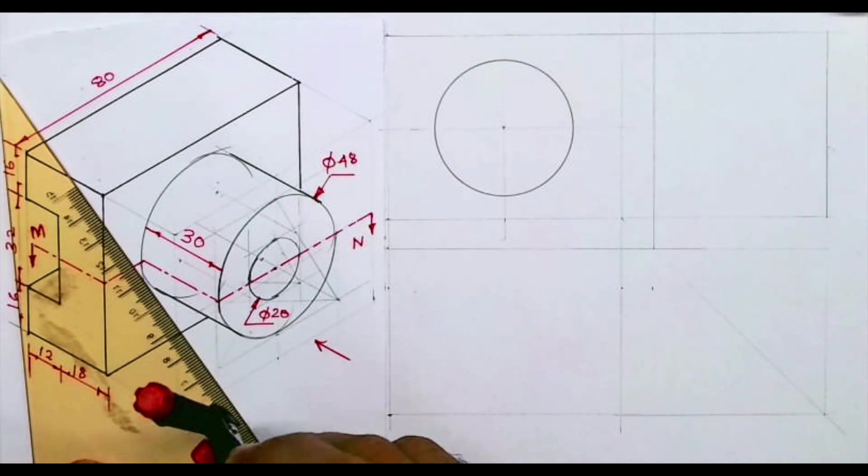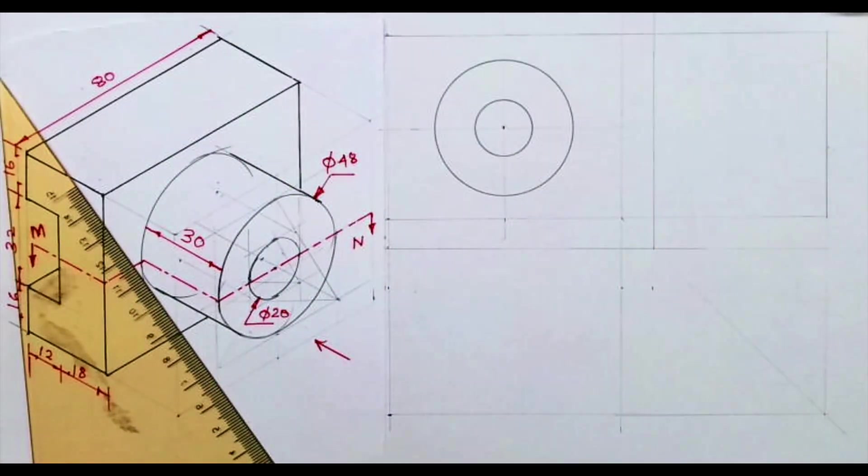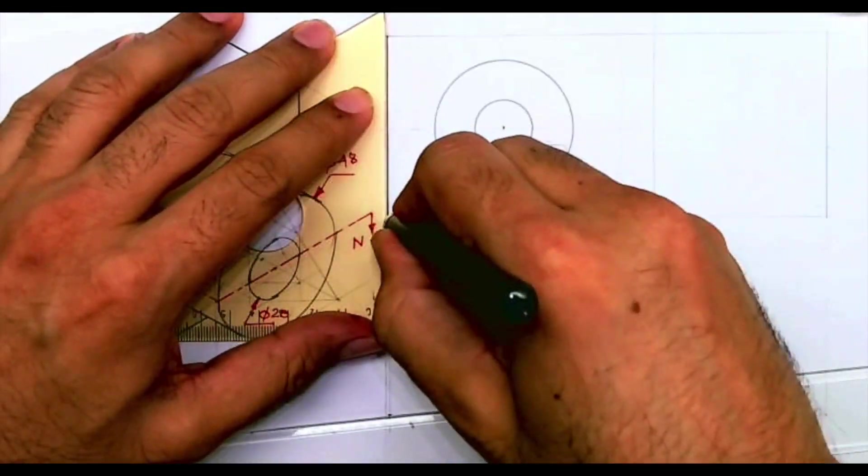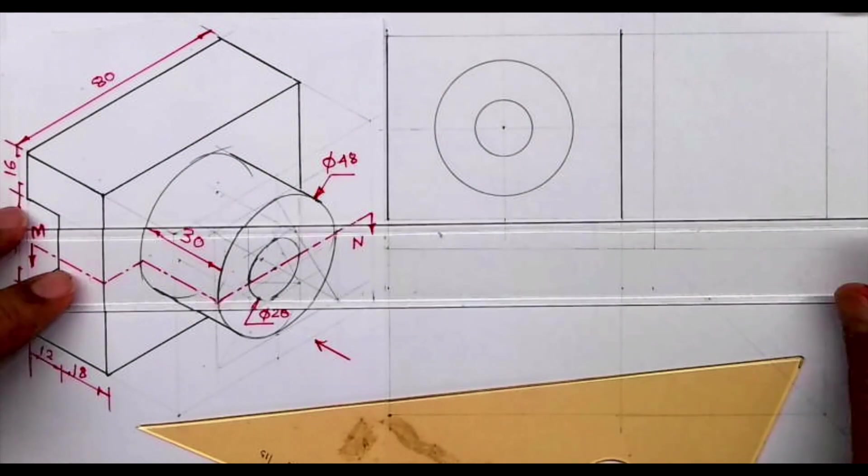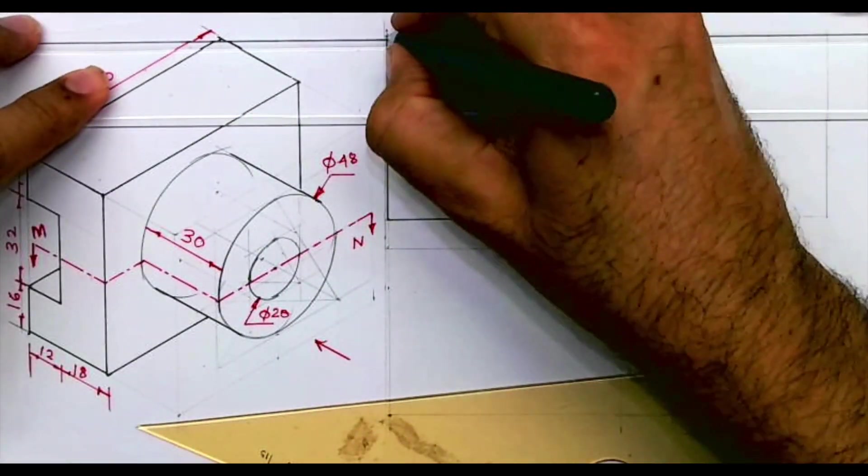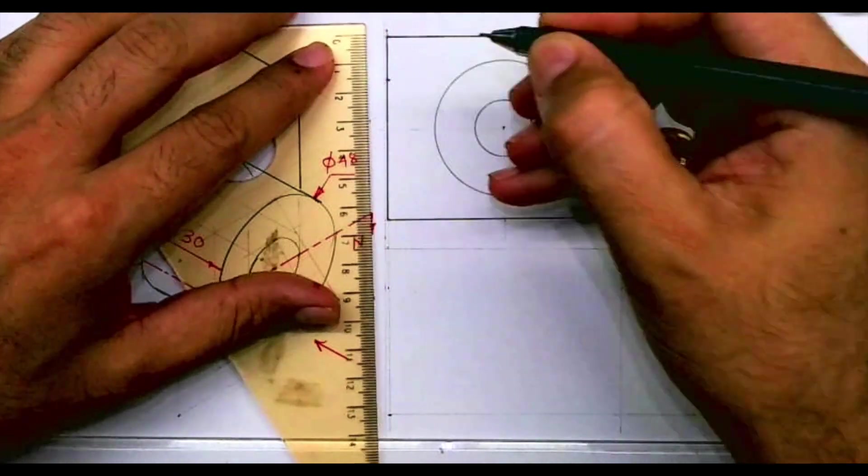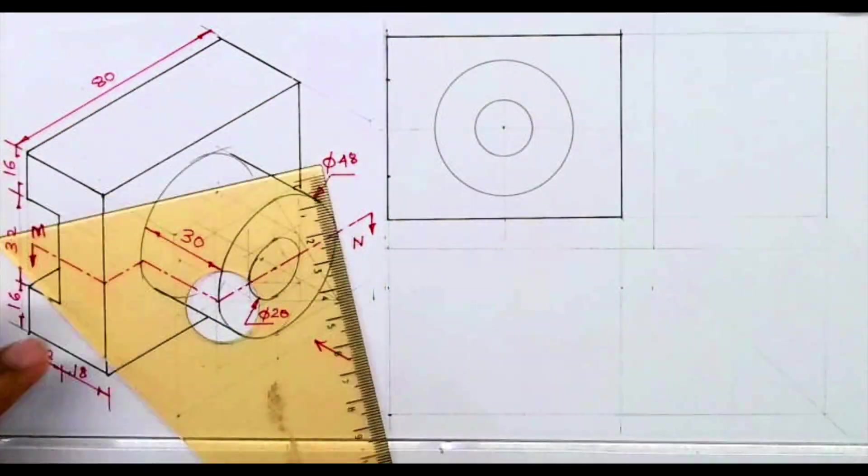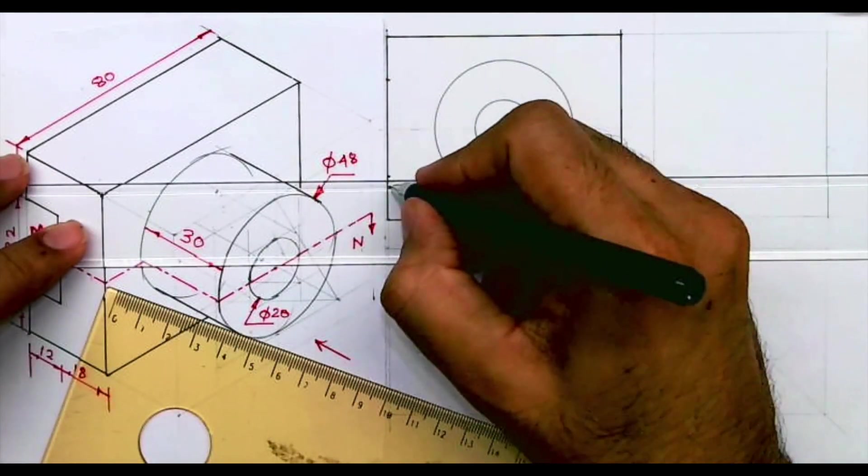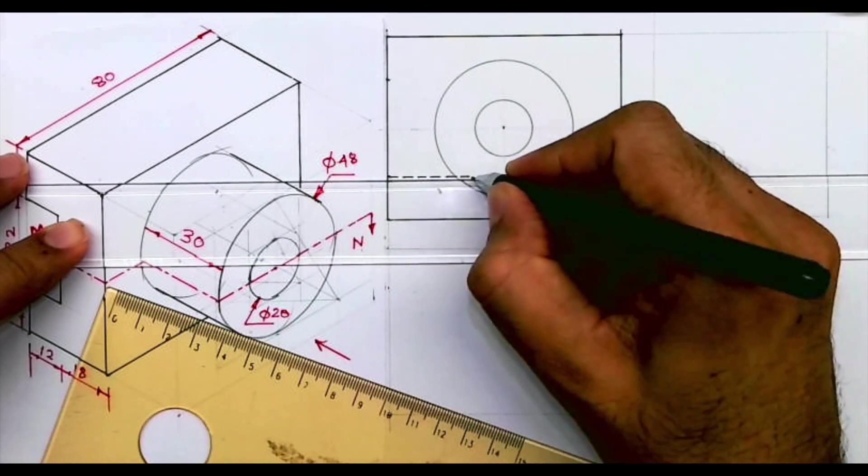Then after that we'll take radius 10 and this entire boundary will be dark. Now this height is 16 so you will take height 16 from up and down and we will draw dotted line. See there is an edge which is going through and through so you draw a dotted line like this because you can't see that edge.